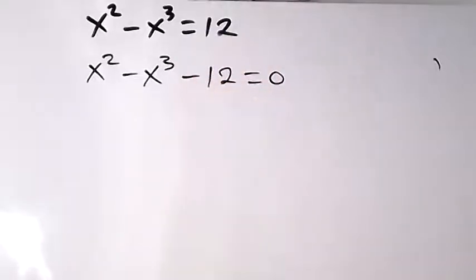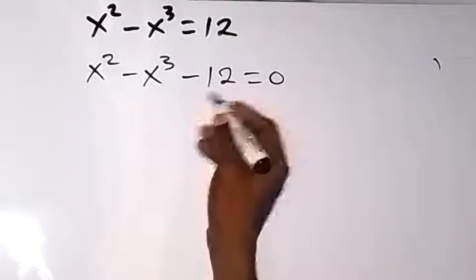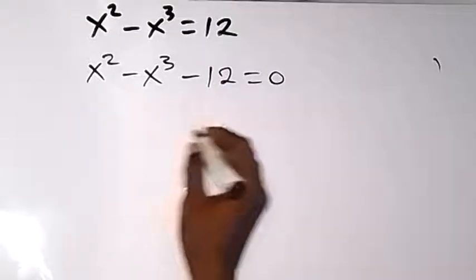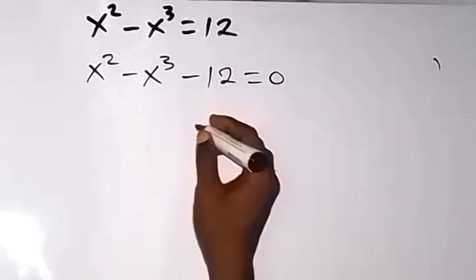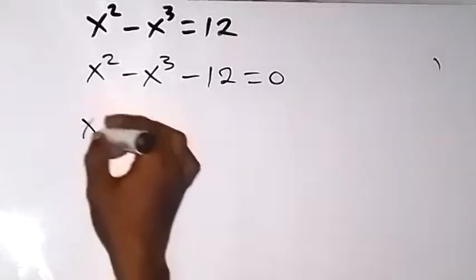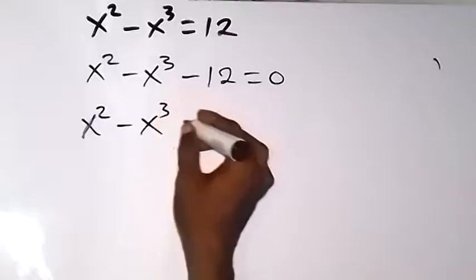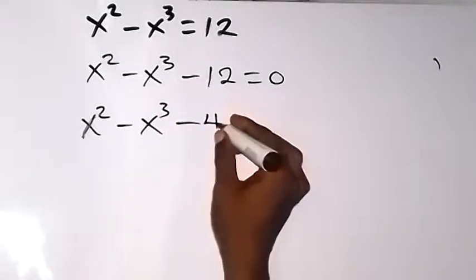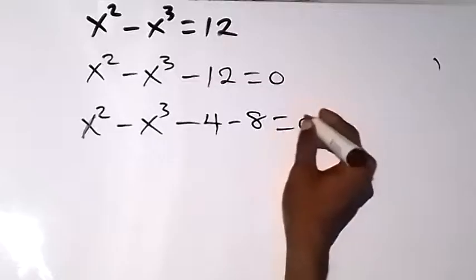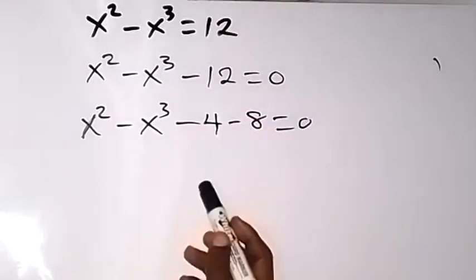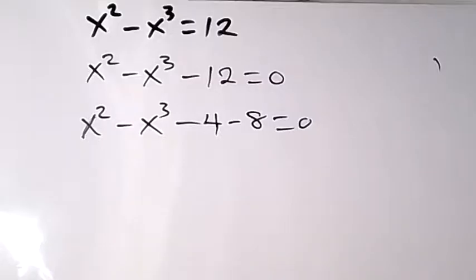After taking this 12 here, we call minus, then equals to 0. From there, let's do something here and try to separate this 12 such that we have minus 4 minus 8. This will become x squared minus x cubed, then minus 4 minus 8 equals 0. So we have written minus 12 in the form of minus 4 minus 8.